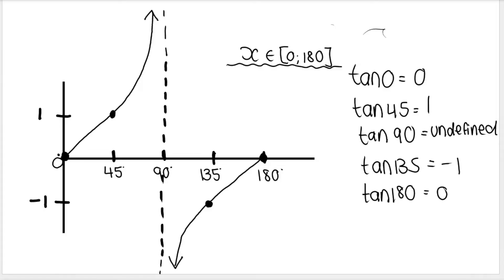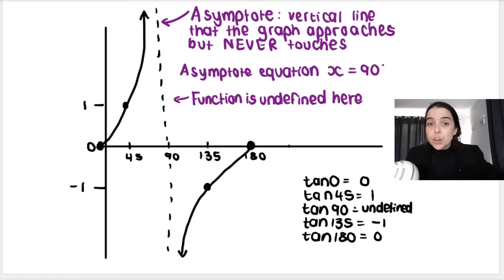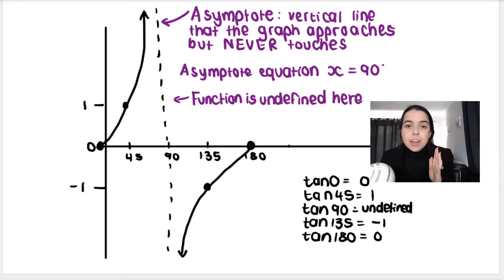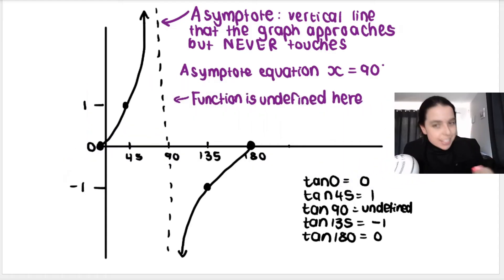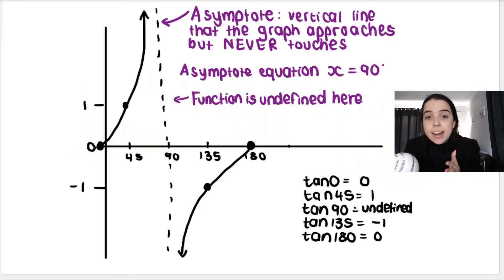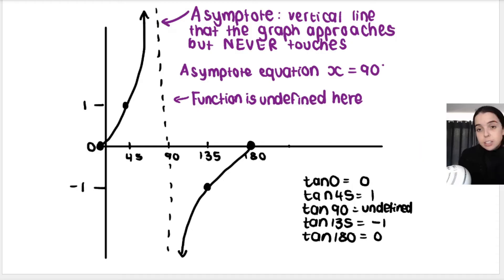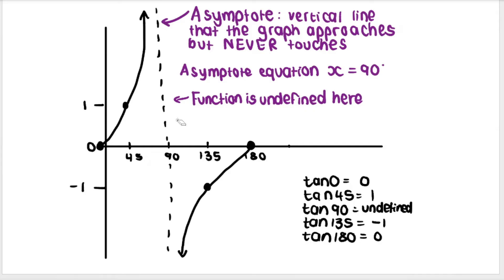So that is the shape of a tan graph if you're plotting from 0 to 180. Remember, an asymptote is a vertical line — in this case vertical, but we do get horizontal asymptotes as well. It's a vertical line that the graph or function approaches but never touches or crosses. The function is undefined there. And if they were to ask you the equation of this asymptote — it's a vertical line parallel to the y-axis, cutting the x-axis at 90 degrees — so the equation of that asymptote is x is equal to 90 degrees.